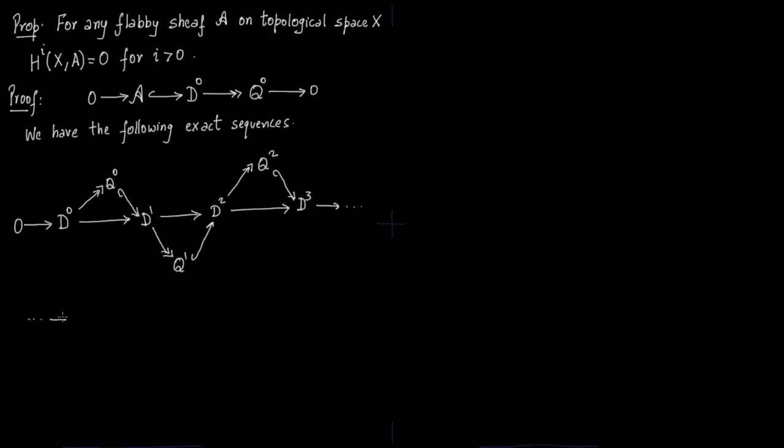Let us write down the ith part of this. You have Di minus 1. You have to form QI minus 1 out of it. QI minus 1 injects into Di. Di is the sheave of discontinuous sections of QI minus 1. Then this PhiI minus 1 is composition of the quotient map and that injective map from QI minus 1 to Di.